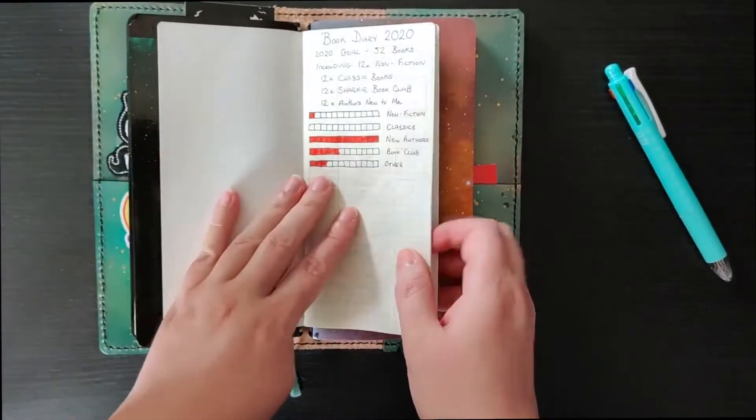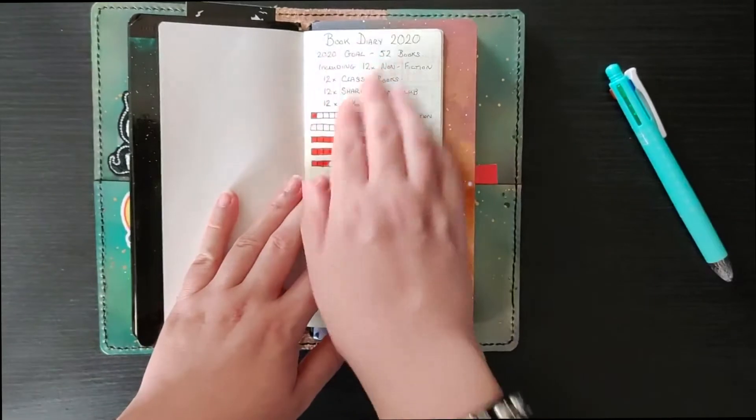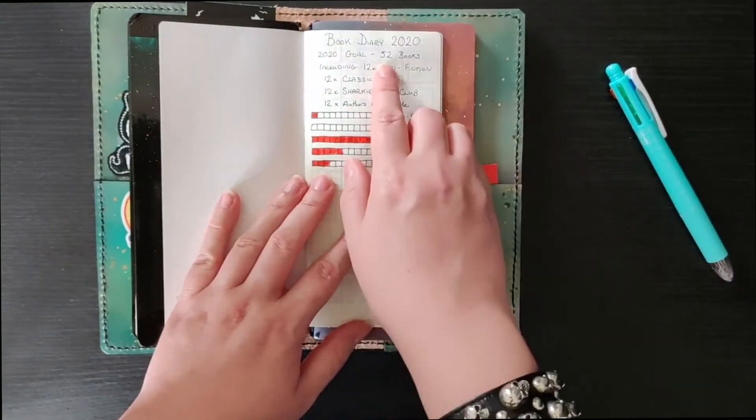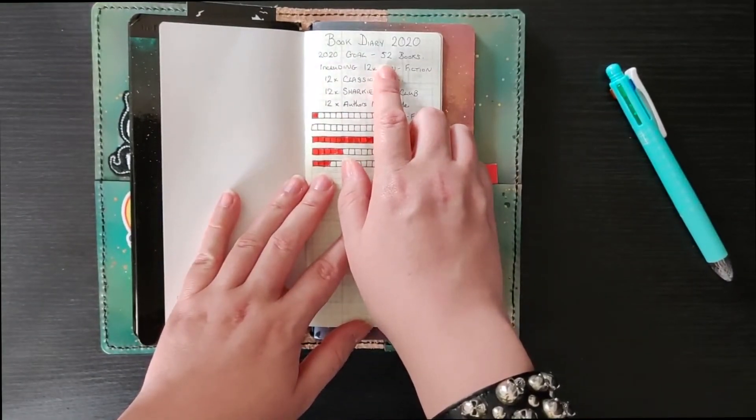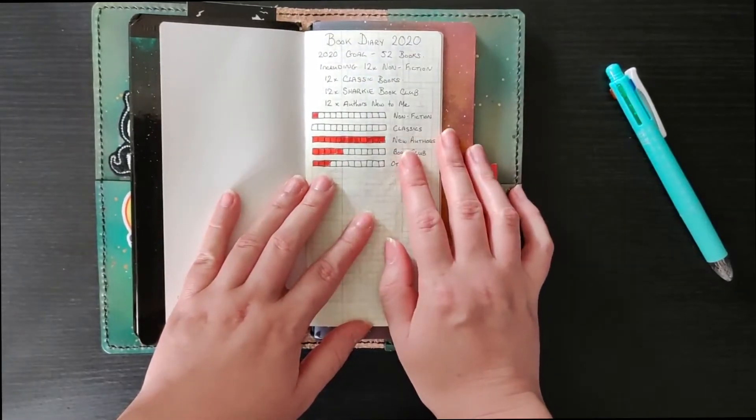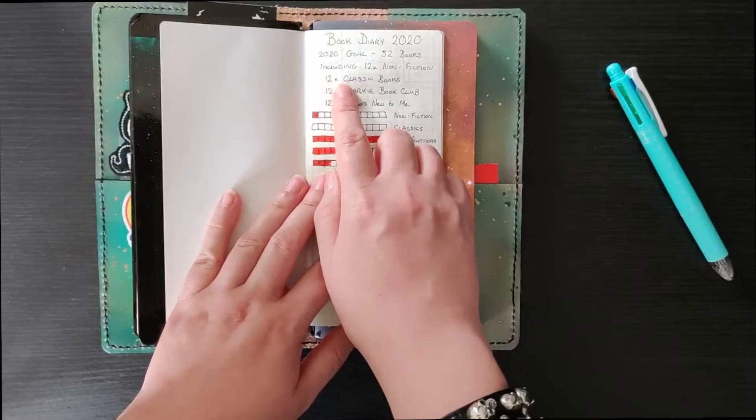So the first page is just an intro with my goals for the year. Originally I was hoping to read 52 books but I managed to smash that completely this year and then I also wanted to read some classic books.